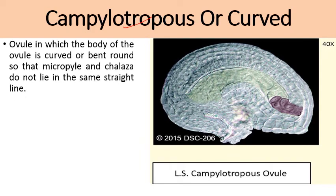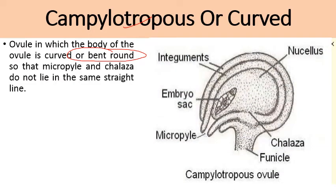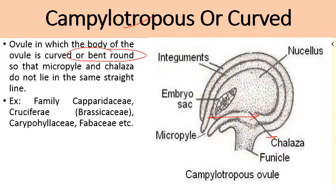Next is the campylotropous or curved ovule. In this type, the body of the ovule is curved or bent so that the micropyle and chalaza do not lie in the same straight line. Because the body is bent, the micropyle and chalazal ends are not in one straight line. This type is found in members of families Capparidaceae, Cruciferae (Brassicaceae), Caryophyllaceae, and Fabaceae.